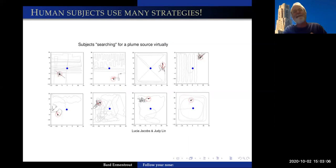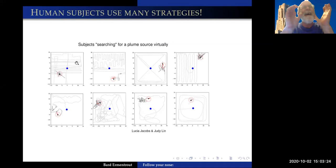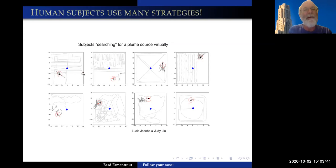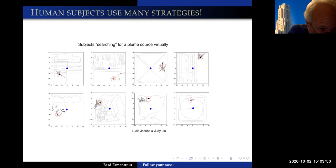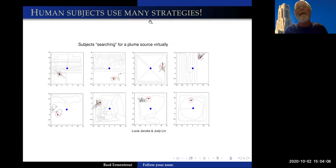This is some interesting work that Lucia Jacobs did. She took one of John Cromaldi's odor landscapes and put people in a room with that landscape from a particular source. People wore headphones, and as they got close to the virtual landscape, sound changed depending on the concentration on the left or right. Some people did random search, others fairly regular back-and-forth searching, others spiraled in. There's a cool one where people actually spiral outward, and some are completely random.